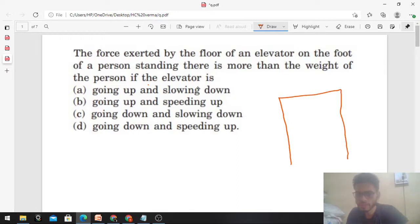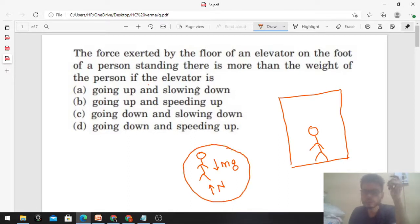Then two forces act on them. One is their own weight. Let me draw the free body diagram. One is their own weight which is mg, and one normal force which the floor of the lift will apply on the foot of the person. So these are the two forces.